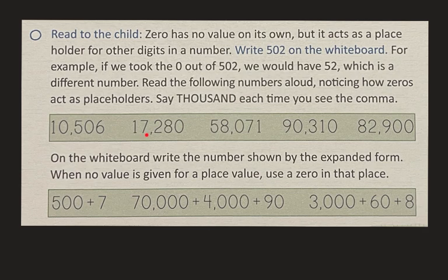Seventeen thousand, two hundred eighty. Fifty-eight thousand, seventy-one. Ninety thousand, three hundred ten. Eighty-two thousand, nine hundred.